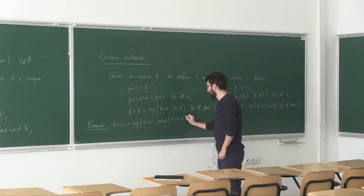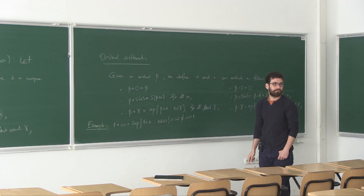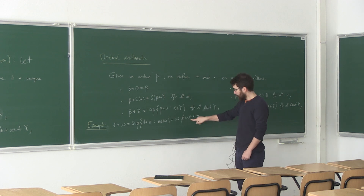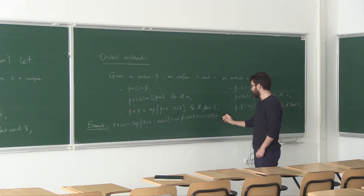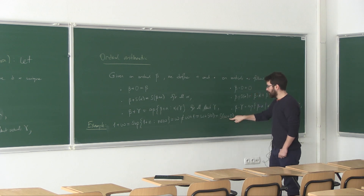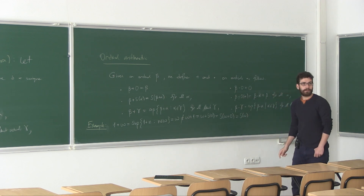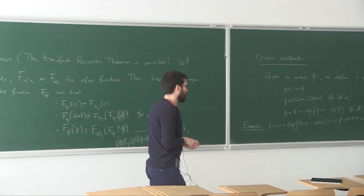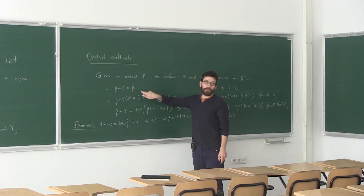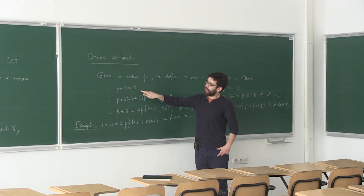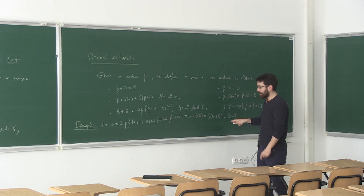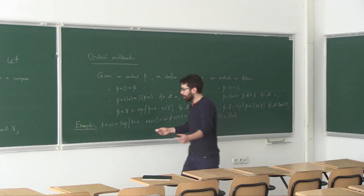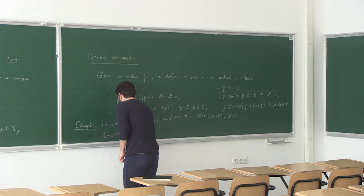However, this is not the same as ω + 1. Because ω + 1 = ω + S(0), and by the second bullet point this is S(ω + 0). But ω + 0 is defined as ω, so this is S(ω) — the successor of ω. So ordinal addition is not commutative: 1 + ω = ω but ω + 1 = S(ω).